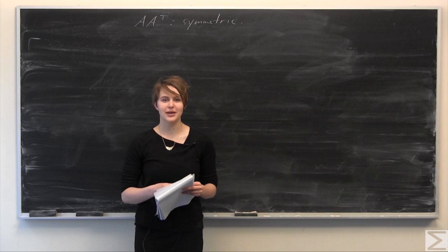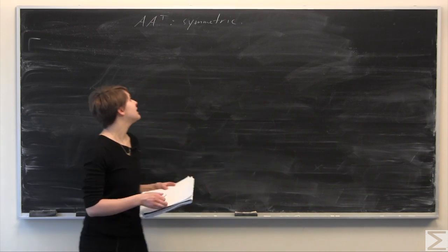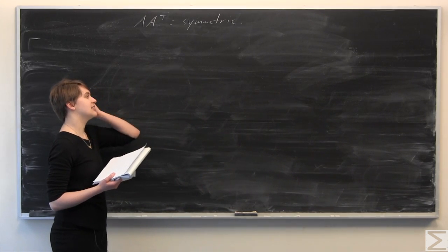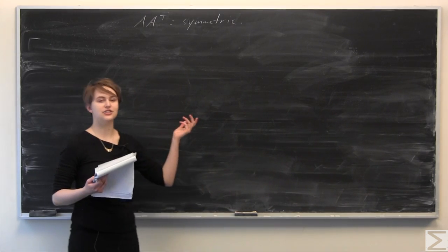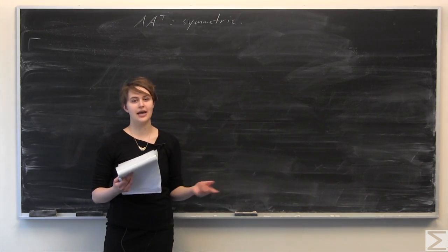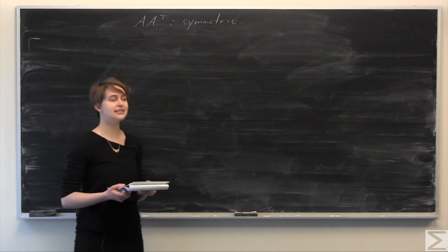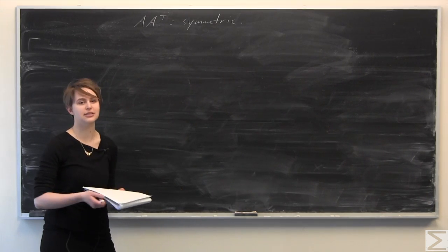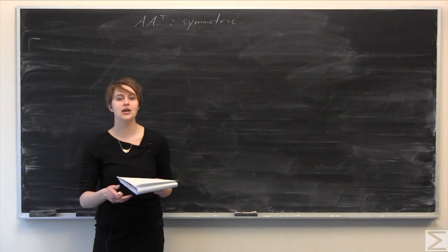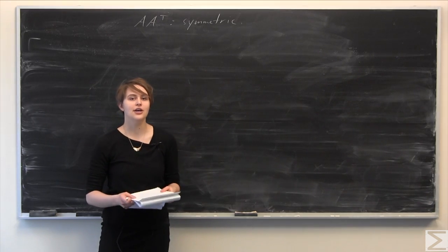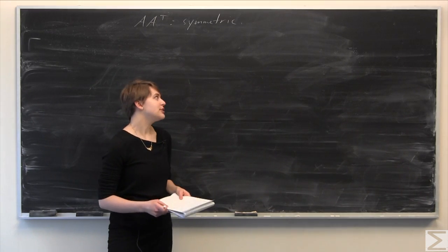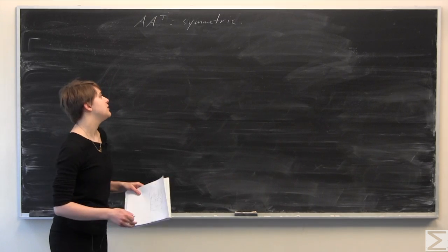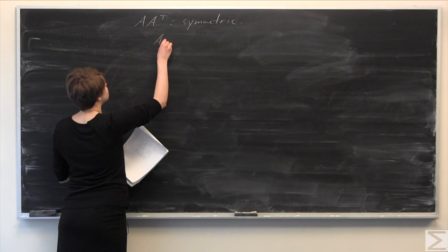So this week's Problem of the Week asks you, given a matrix A where A is not necessarily square — A is just some m by n matrix — to prove that A times A transpose is a symmetric matrix. We're going to do this symbolically using the fact that we have A.